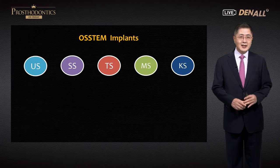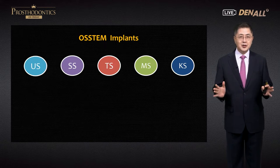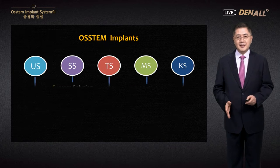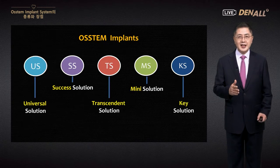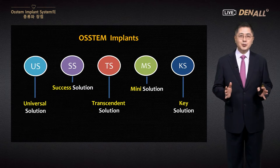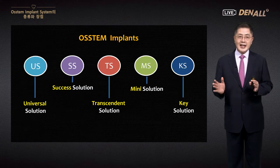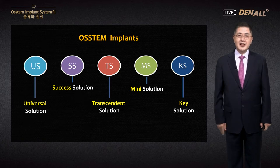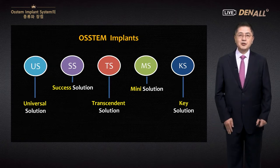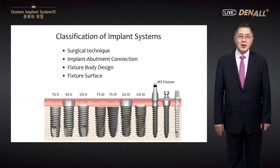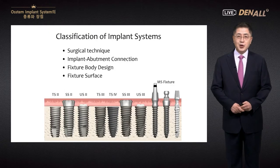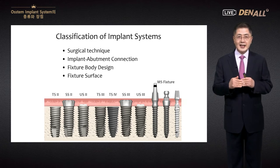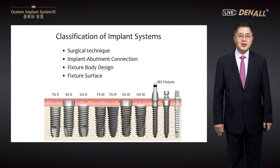Currently, Ostem implants have a very wide variety of systems. As you can see: USSS, TS, MS, and the latest one, KS. Various systems are available. KS stands for Key Solution, which is the latest one. There are many different implant systems within the Ostem implant lineup, and we can classify them into different categories.